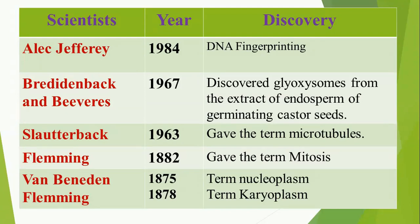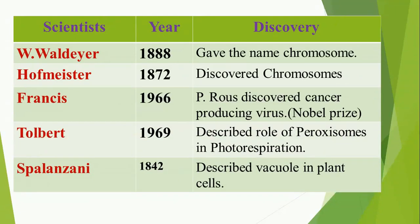Fleming gave the term 'mitosis' in 1882. The term 'nucleoplasm' was given by Van Beneden and the term 'karyoplasm' was given by Fleming in 1875 and 1878 respectively. Waldeyer in 1888 gave the name 'chromosome,' but chromosomes were discovered in 1872 by Hofmeister. Francis in 1966 discovered the Rous cancer-producing virus, which is why it is called Rous sarcoma. Tolbert in 1969 described the role of peroxisomes in photorespiration. Spallanzani in 1842 described vacuoles in plant cells.